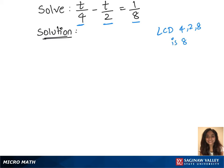Multiply both sides by 8 now. 8 times (t/4 - t/2) equals 1/8 times 8. Apply distributive property on the left side to remove groupings.